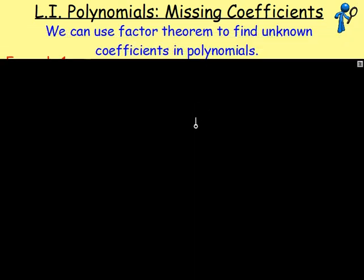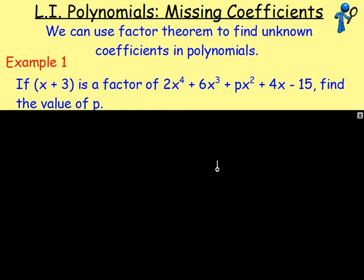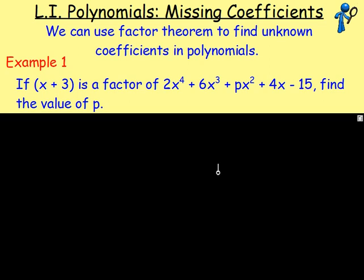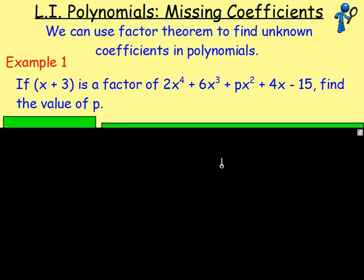We can use factor theorem to find unknown coefficients in polynomials. So I'll do a few examples of that. Example number 1: if x plus 3 is a factor of 2x to the power of 4 plus 6x to the power of 3 plus px squared plus 4x minus 15, find the value of p.